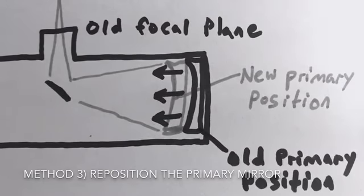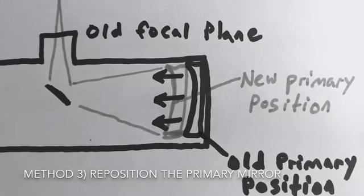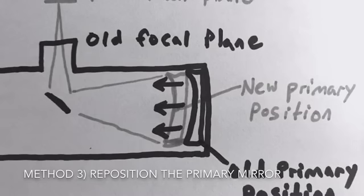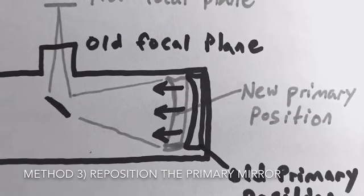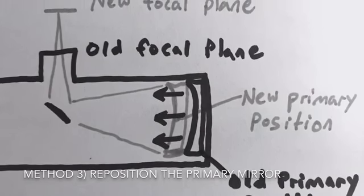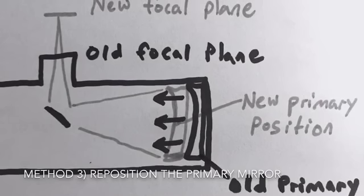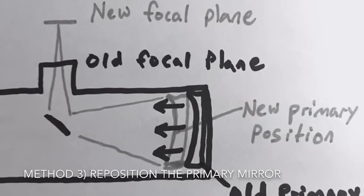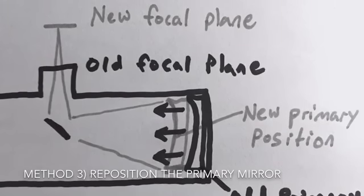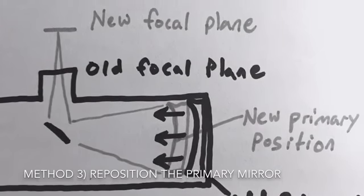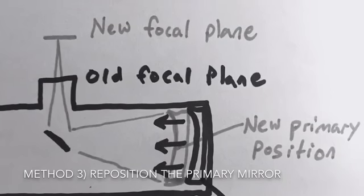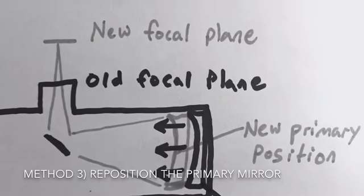So that brings us to method number three, and that's positioning the primary mirror forward in the telescope, closer towards the secondary mirror. And by doing this, you're moving the focal plane up and away from the focuser so that it can reach the camera sensor, much like the Barlow but with no real increase in focal length. The advantage here is that you actually shorten the focal ratio of the telescope and achieve a wider field of view.